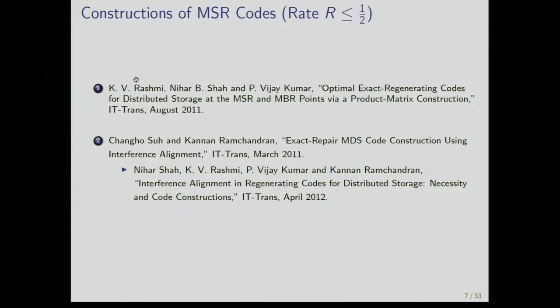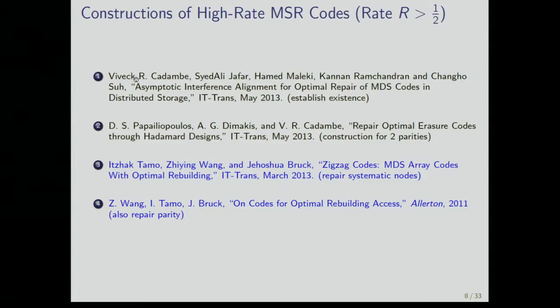In terms of constructions for MSR codes, there have been many. And, you know, a lot of the authors are here. There was one when Rashmi and Nihar were at IIC. They had come up with this product matrix construction. And then, there was another paper by Changho and Kunun, which built on earlier results in this paper. But both of these constructions were for rate less than or equal to one-half. And so, there was interest in saying, well, how do you construct codes for rate greater than one-half? And they were constructions. So, there was one paper which established existence. There was another paper that constructed it for the case of two parities. Then, Tamo, Jing, and Josh Brook actually constructed it partially in the sense that they only repaired systematic nodes. And then, they followed up in a subsequent paper in which they actually rebuilt even the parity nodes. So, this is an example of a high-rate MSR code. So, this does the job in terms of rate, but it has a slightly large symbol alphabet. So, we'll talk about that. So, the focus of this talk is how do you actually get the alphabet size down.